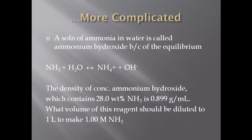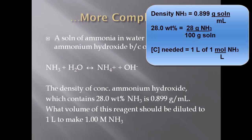I want to do a more complicated dilution problem. The only reason this is more complicated is that you have to prepare an answer before you actually use the dilution formula. A solution of ammonia in water is called ammonium hydroxide. The density of concentrated ammonium hydroxide, which contains 28% ammonia, is 0.899 grams per mL. What volume of this reagent should be diluted to one liter to make one molar NH3? So they want to know how much of that 28 weight-percent NH3 with that density do I need to make one liter of one molar NH3.